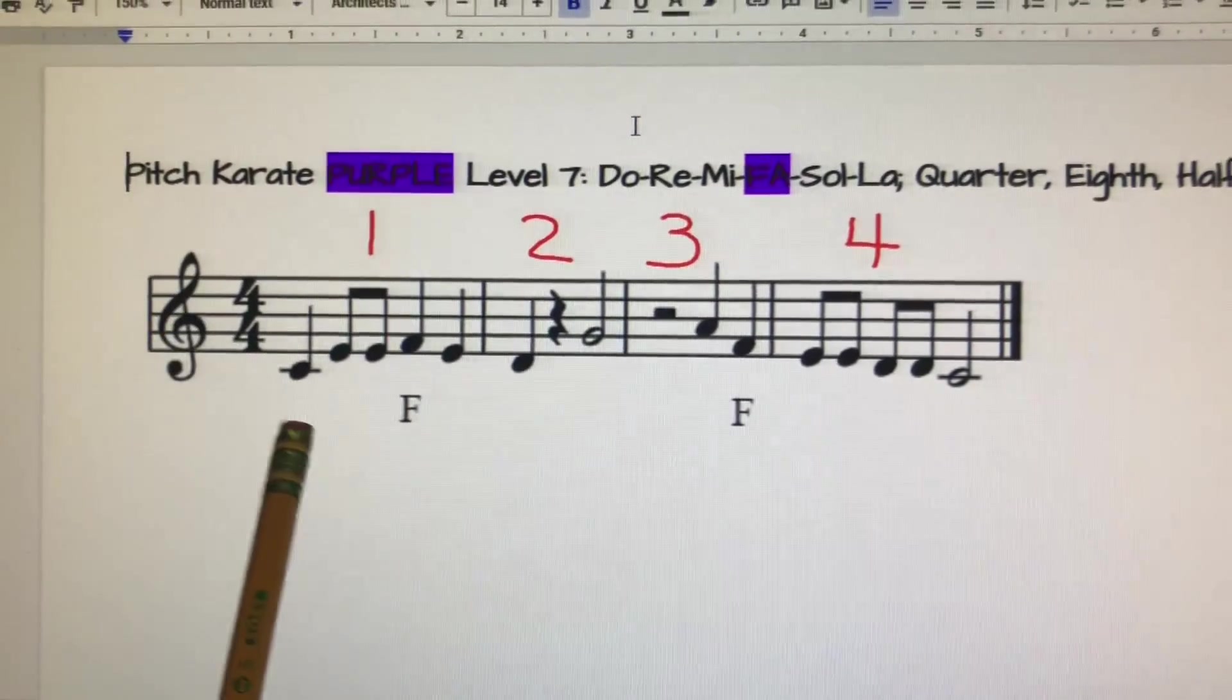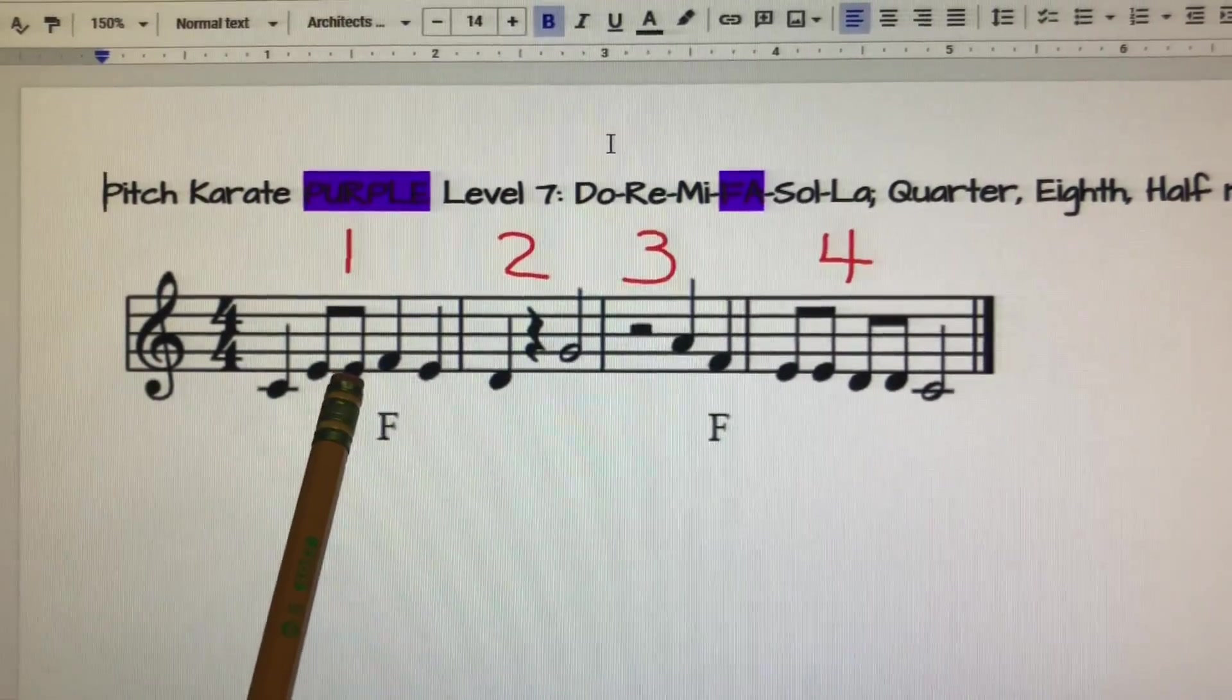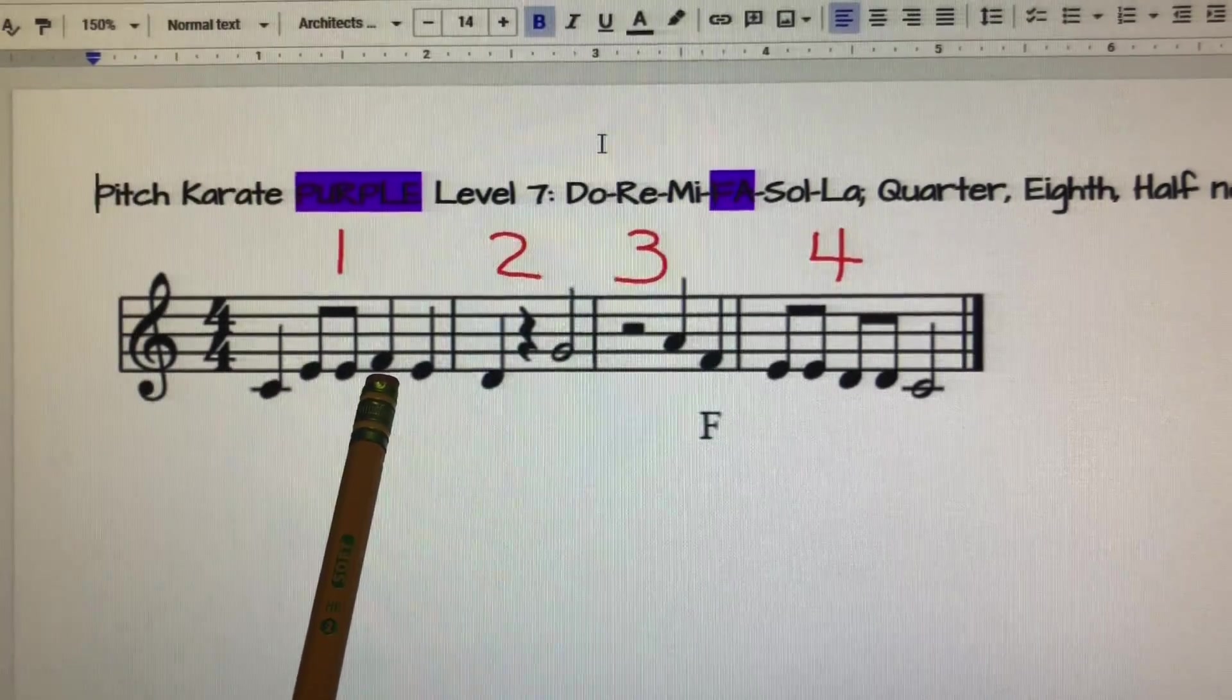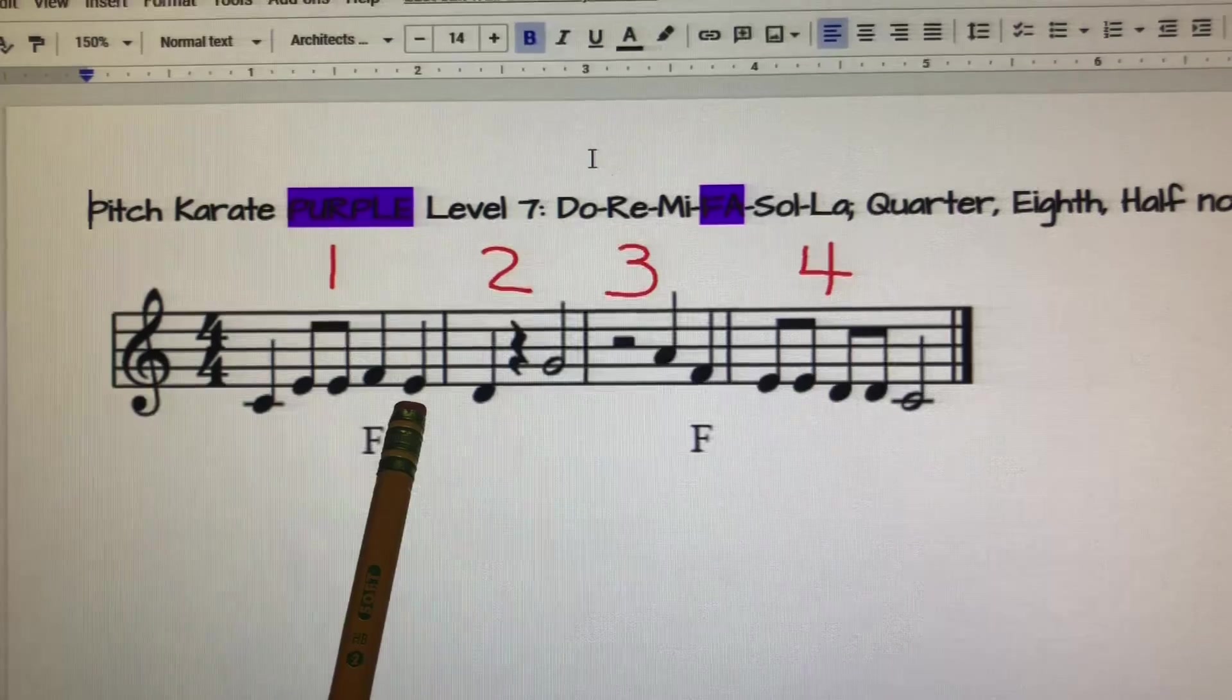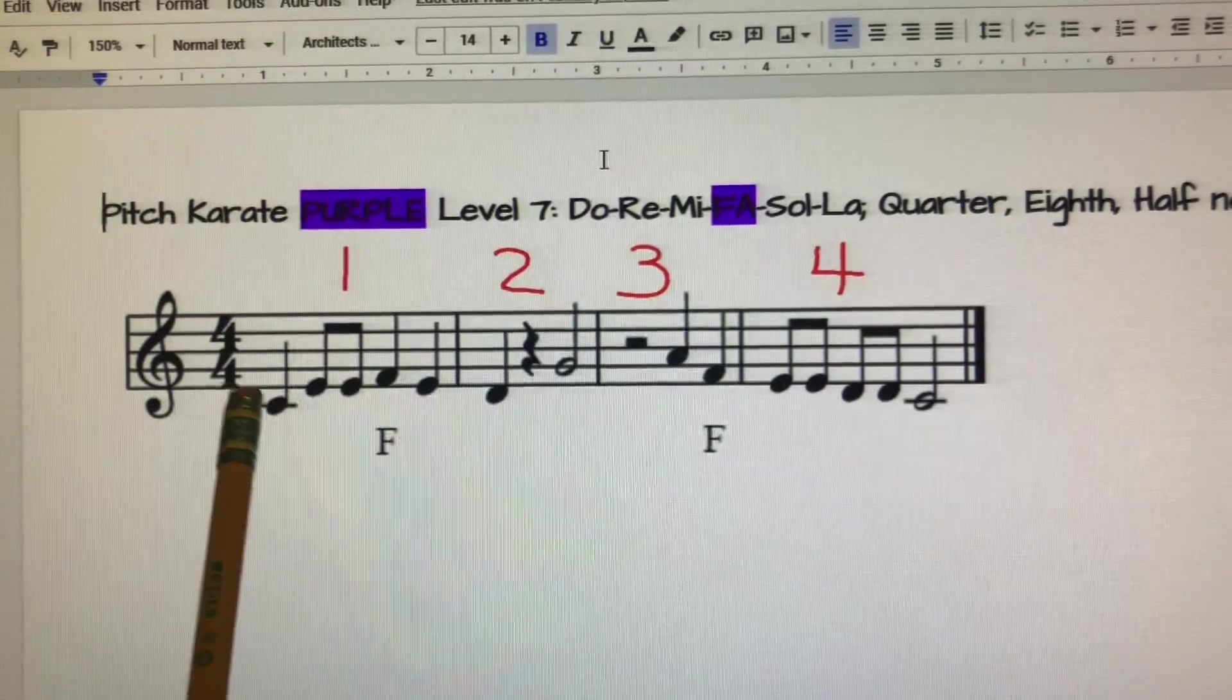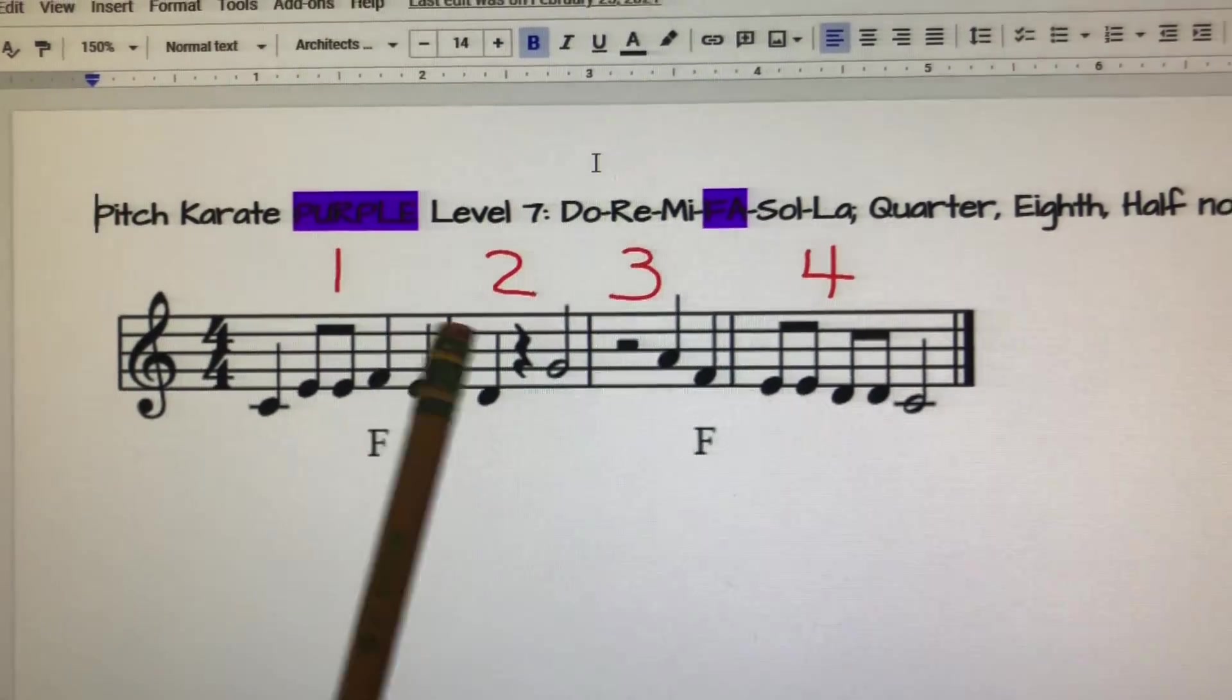Starting off we've got low Do there. What syllable is on the bottom line? Should be Mi. The F is a reminder that that syllable should be Fa on the bottom space, and then we have another Mi. So let's try singing measure one. Ready, go: Do, Mi, Mi, Fa, Mi. Your turn!